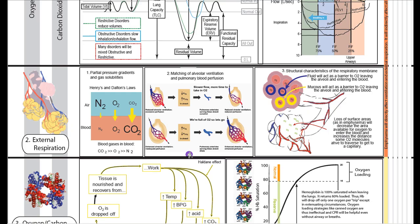Now that we have air into the lungs and ventilation, we need to get the oxygen into the blood vessels — this is called external respiration. There are essentially three things to consider: first, how gases interact with each other and how likely they are to go into fluid, described by partial pressure gradients and gas solubilities, governed by Henry's Law and Dalton's Law.